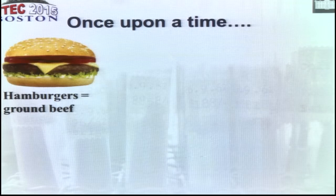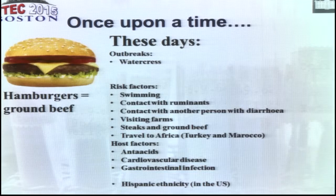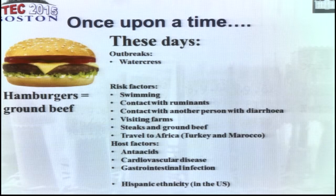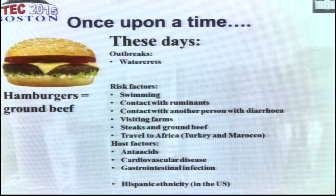Once upon a time, hamburgers and ground beef were the primary source of O157. But two studies at VTEC 2015 demonstrated that these days you may also have watercress and other fresh produce as risk factors. A summary of studies done in the Netherlands and the US shows that swimming, contact with ruminants, contact with persons with diarrhea, visiting farms, steaks and ground beef, and travel all play a role, as do host factors such as anti-acids, cardiovascular disease, other gastrointestinal infections, and in the US, Hispanic ethnicity probably associated with consumption of specific foods.